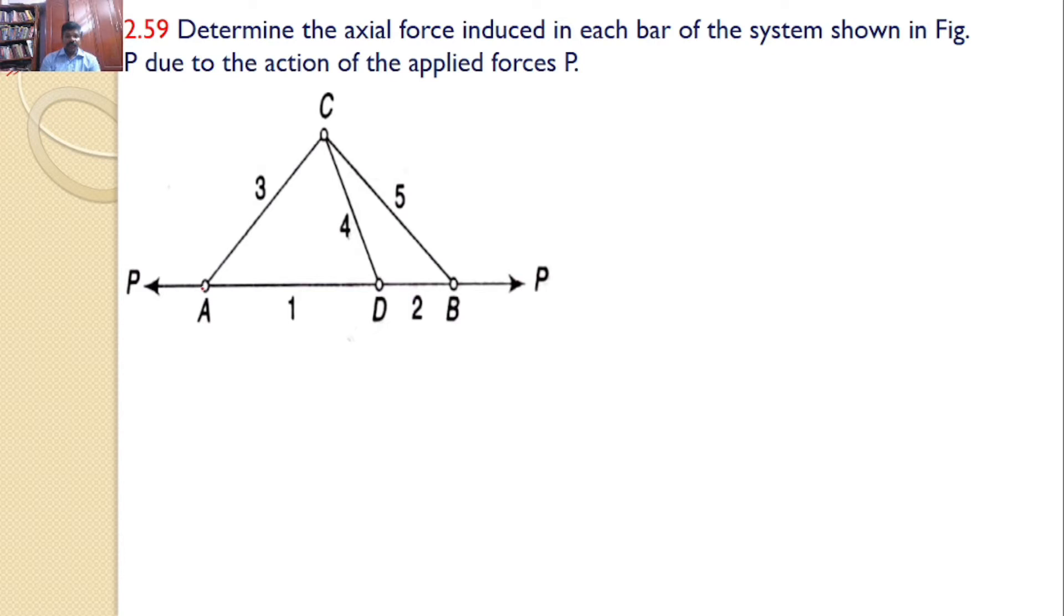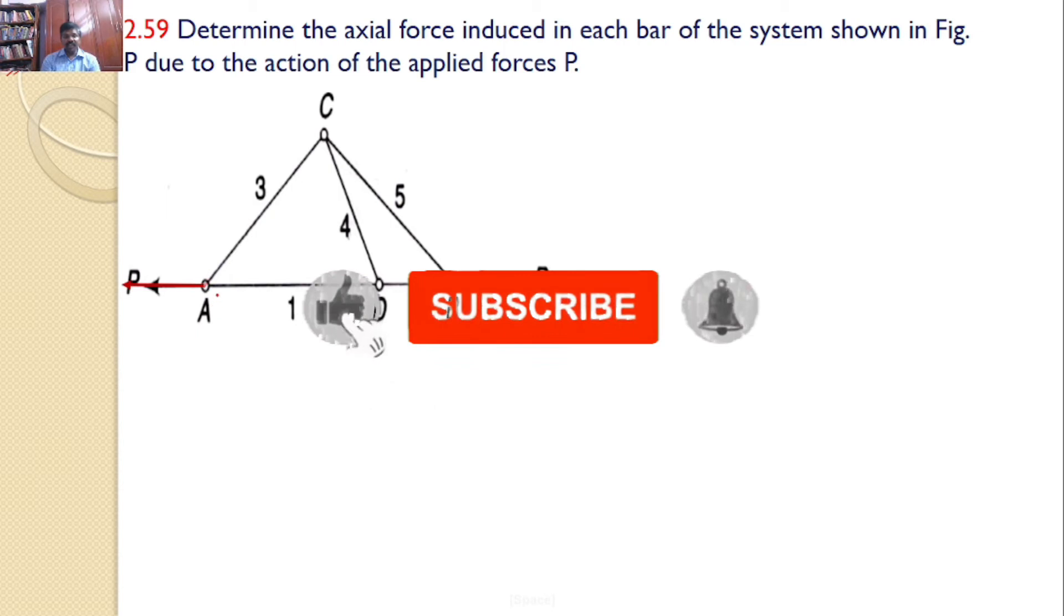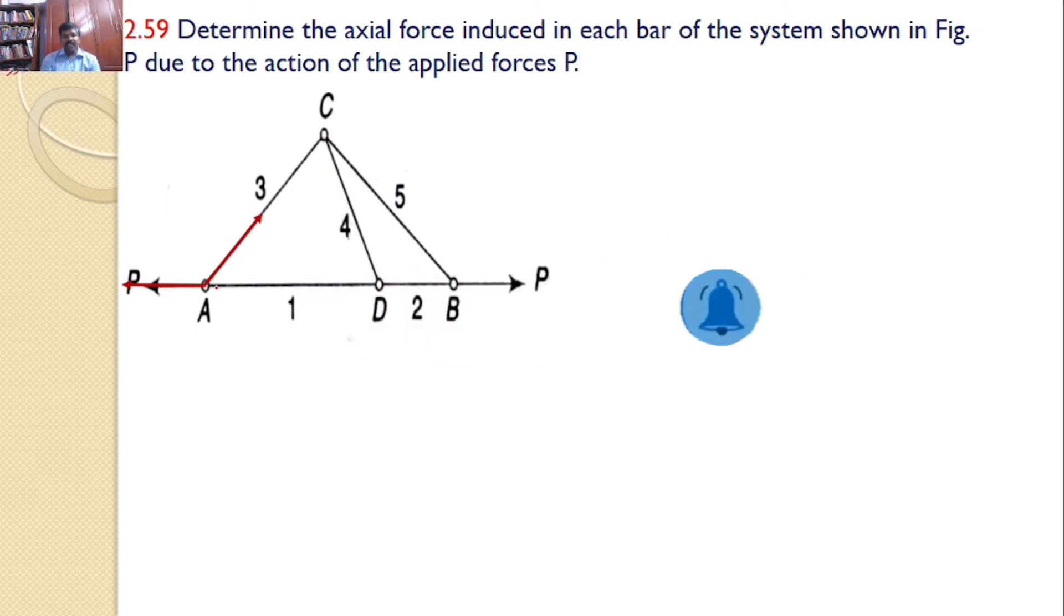Let us consider the free body diagram at A. There are three forces. One force is the applied force P. Another force is the force in bar AC, and initially we are assuming it is tensile. So it is away from point A and let the magnitude be S3. And this force magnitude is S1.